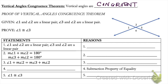Note: in this proof we cannot use the theorem we're trying to prove as a reason, since we haven't proved it yet. We're going to start with our given information, which says that angle one and angle two are a linear pair, and angle three and angle two are a linear pair. We're trying to prove that angle one and angle three, which are vertical angles, must be congruent.